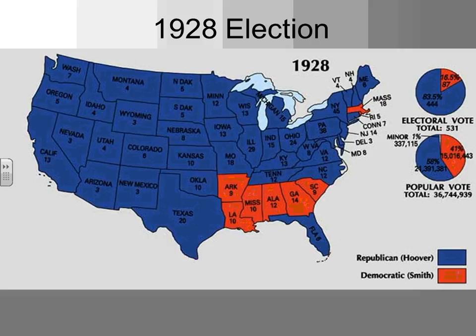The 1928 election is coming off a series of moderately popular Republican presidents — we had Harding, who died, and then Calvin Coolidge up until 1928. The guy who's going to run on the Republican ticket to replace Coolidge is Herbert Hoover, who is very much a standard Republican. He's actually very popular himself — he was part of a well-regarded relief agency during World War I, and he's maybe even a little more progressive than Coolidge.